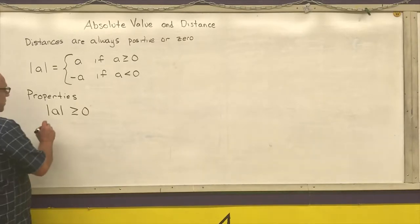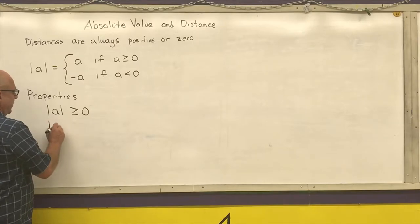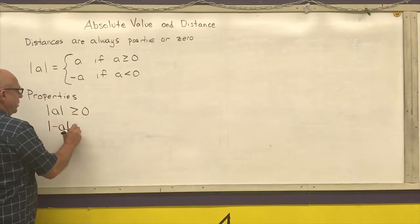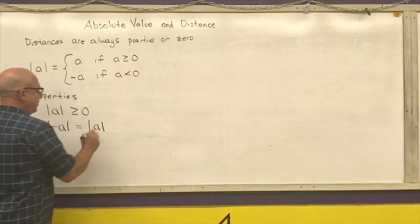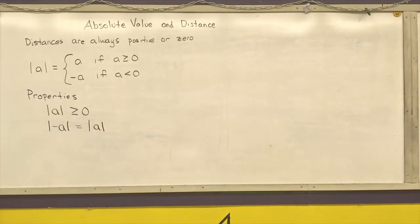Next one. The absolute value of a negative number is equal to the absolute value of the original number.